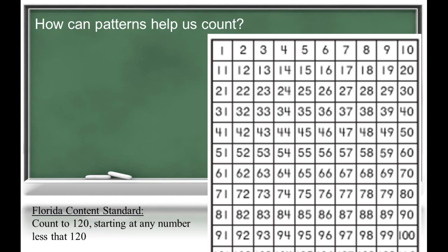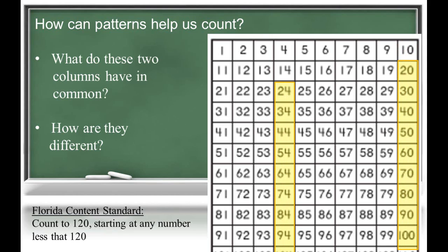We see similar struggles when counting by tens. Students are able to fluently count by the decade numbers but have trouble counting by ten starting at a different number. Let's look at these two columns. How are they alike and how are they different? Children may describe how the left digit increases by one while the right digit does not change.